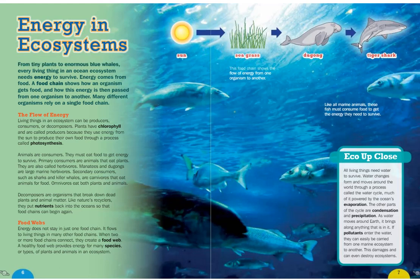Energy passes from one living thing to the next as one eats the next. Living things in an ecosystem can be producers — plants — consumers — animals that eat plants or other animals — or decomposers, which break down the bodies of dead plants and animals. Plants are called producers because they use energy from the Sun to produce their own food through photosynthesis. Primary consumers, also called herbivores, eat plants. Manatees and dugongs are large marine herbivores. Secondary consumers such as sharks and killer whales are carnivores that eat animals for food. Omnivores eat both plants and animals.